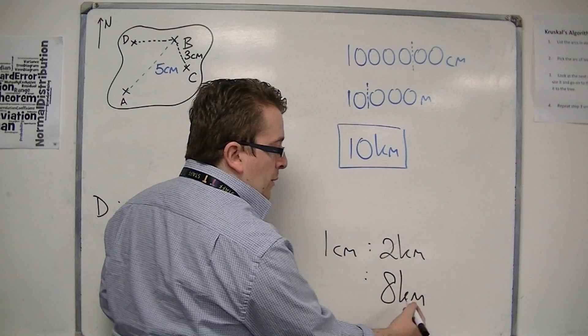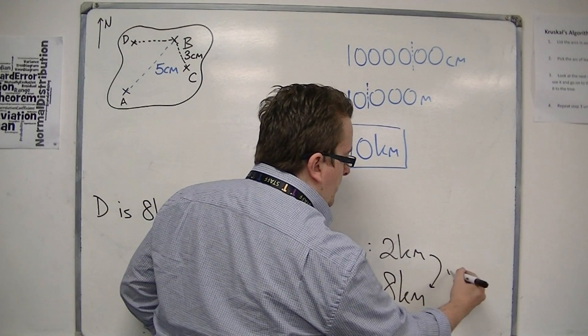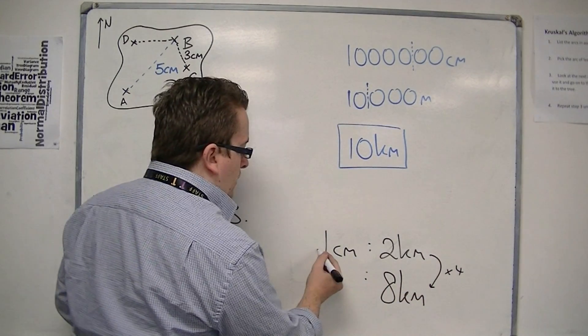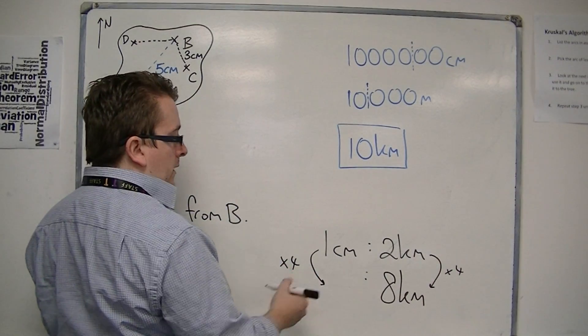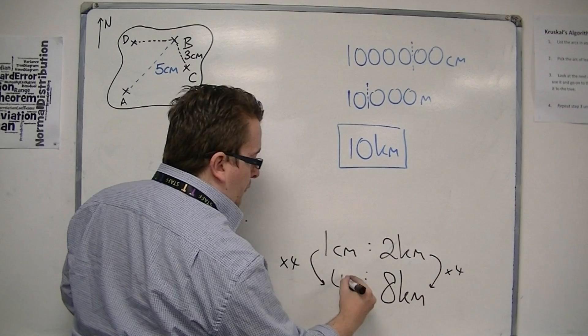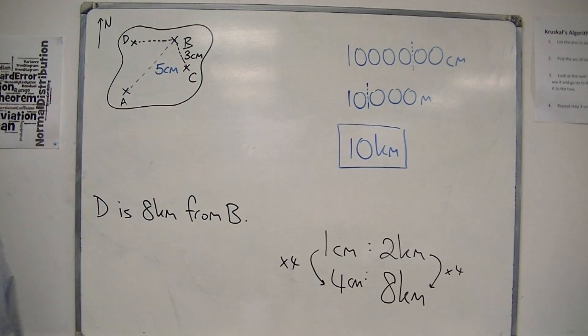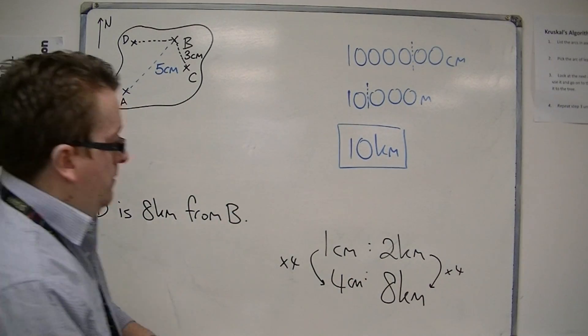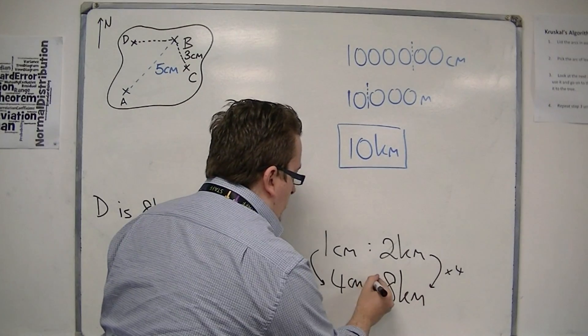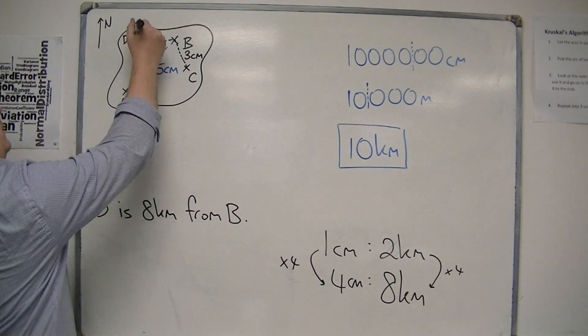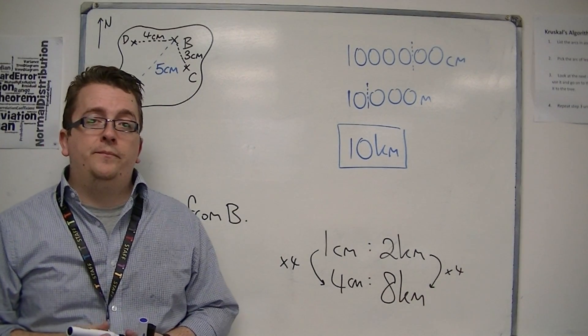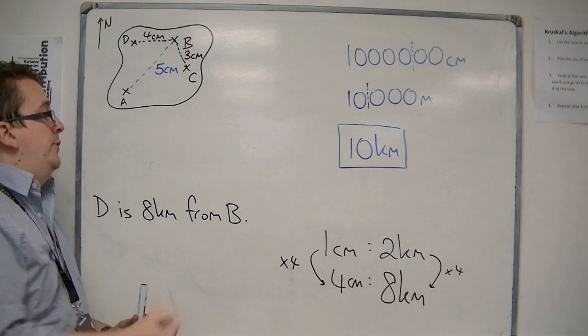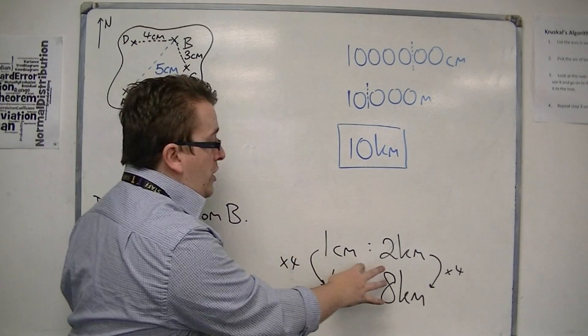And now I can say, well, to get from two kilometres to eight kilometres, I'd have to multiply by four. So it's exactly the same on the left-hand side. One times four is four centimetres. So four centimetres would be eight kilometres. So I can say that D and B are four centimetres apart. So that's how you can use a map ratio.